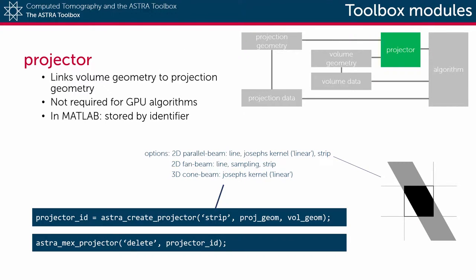The astra_create_projector function stores the projector object inside the ASTRA memory and returns an identifier to the user, such that it can be used in a subsequent library call.